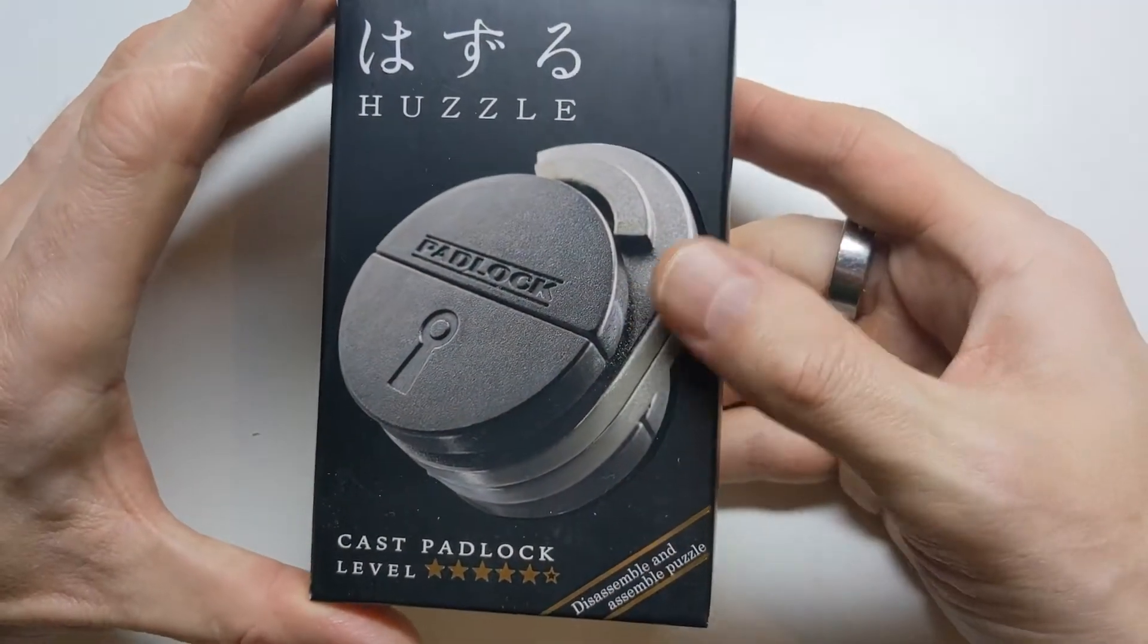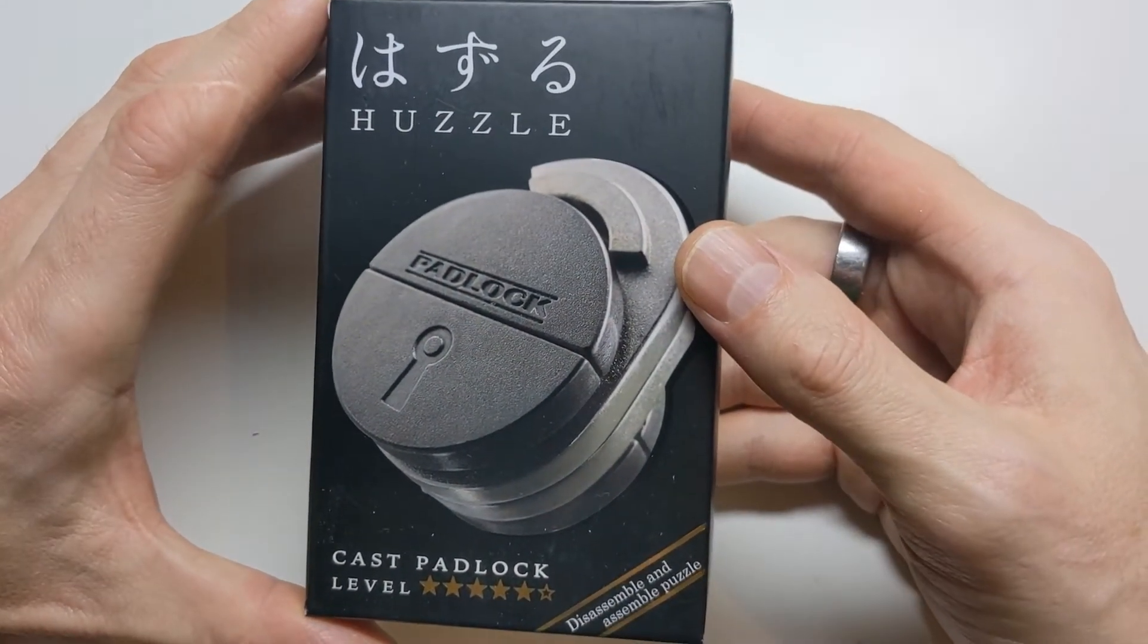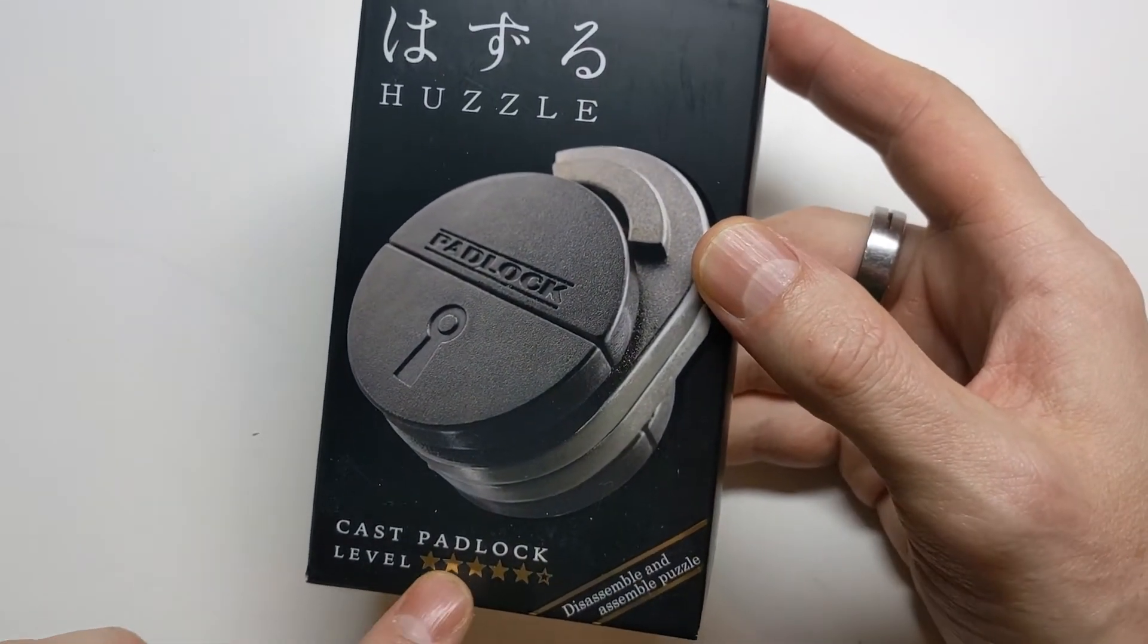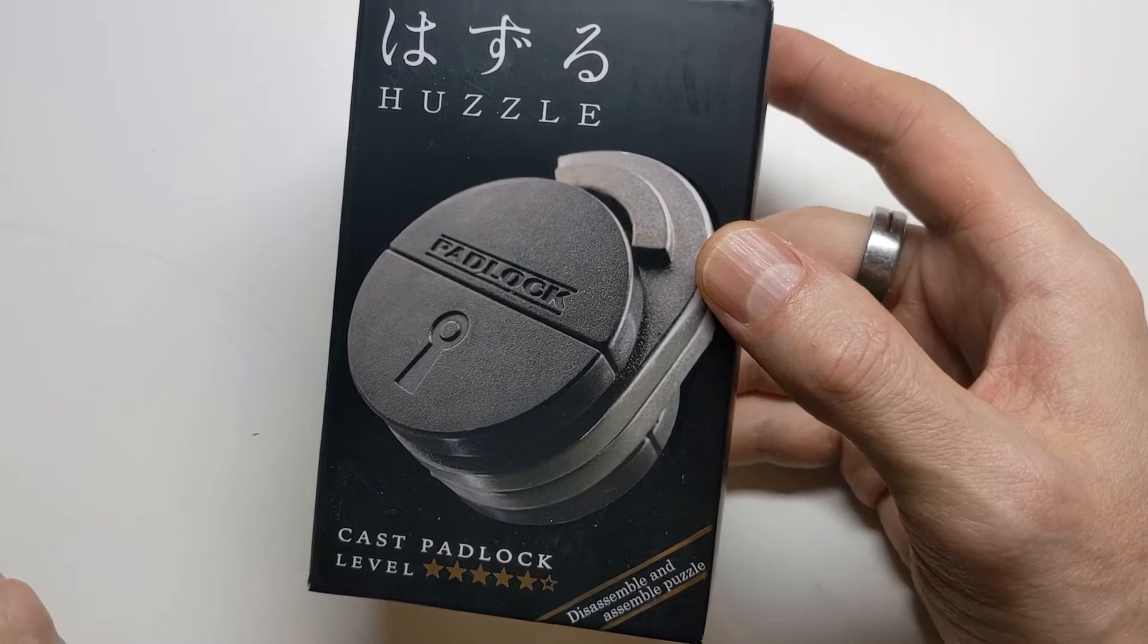Hi, I'm the Lock Picking Cuber, and in this video I'm going to have a look at this Hanayama Cast Padlock puzzle. It's a 5 out of 6, and given that it's Hanayama, it's therefore going to be pretty difficult.